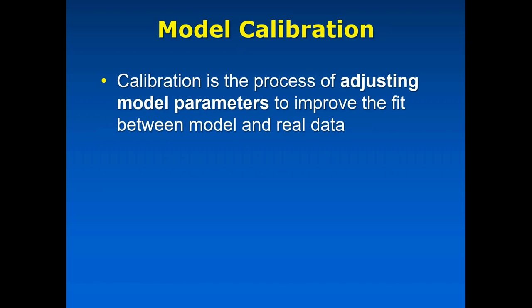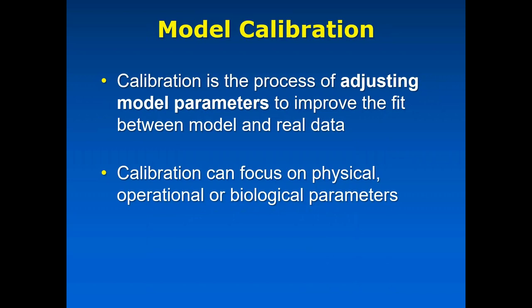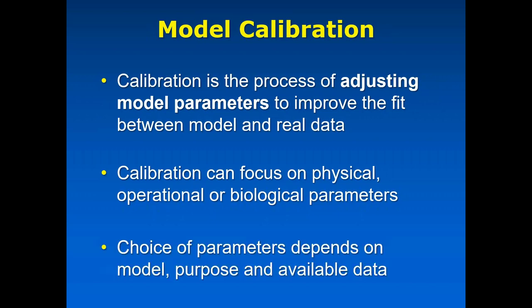Calibration, as I'm talking about it for this webinar, is really about the adjustment of model input parameters so that you can improve the fit of the model to some measured real data that you have. You have a solid line on a graph — that is the model's prediction — and some data points measured in the field with some level of error included. When you calibrate, you try to get the model to fit to that data as best you can by adjusting physical, operational, biological, and settling parameters.